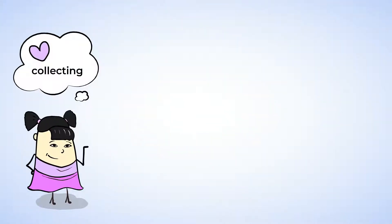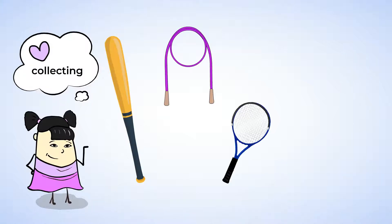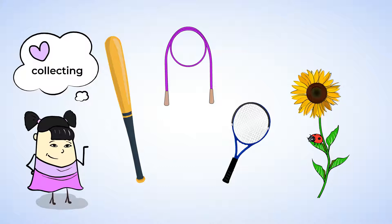Sue is a big fan of collecting. She has lots of different collections. Baseball bats, jump ropes, tennis rackets, flowers, even bugs. She's measuring and organizing her collections, so we are going to help her out.